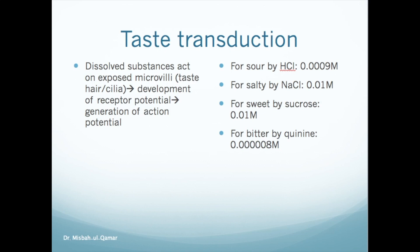How is the receptor potential initiated? Like most sensory receptor cells, the membrane of a taste cell is negatively charged on the inside. Application of taste substances causes a partial loss of the negative potential. This decrease in potential is approximately proportional to the logarithm of the concentration of the stimulating substance, and this change in electric potential is called the receptor potential.